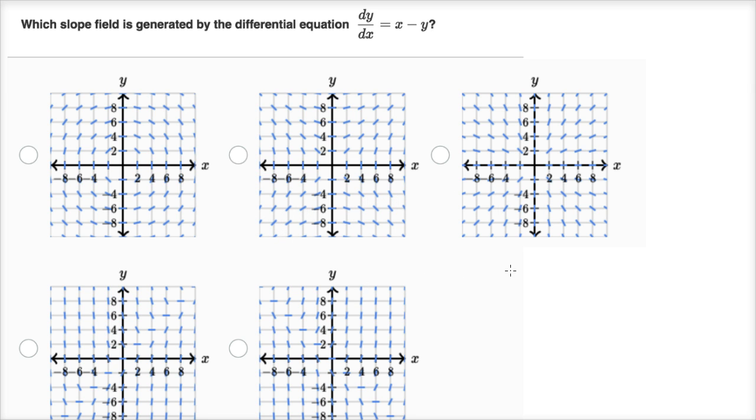And so what we can do here, since they've already drawn some candidate slope fields for us, is figure out what we think the slope field should be at some points and see which of these diagrams, these graphs or these slope fields, actually show that. So let me make a little table here. And we can do it at a bunch of values.